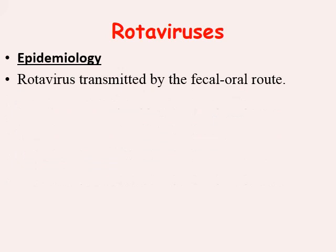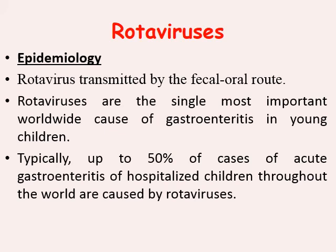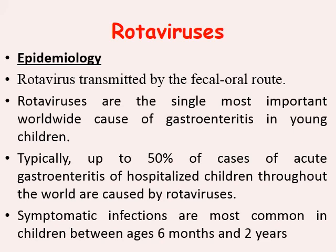Epidemiology: rotavirus is transmitted by the fecal-oral route. It is the most important worldwide cause of gastroenteritis in young children, accounting for about 50% of cases of acute gastroenteritis in hospitalized children throughout the world. Symptomatic infections are most common in children between the ages of 6 months and 2 years — this is the most important age group for severe diarrhea.